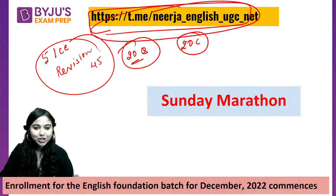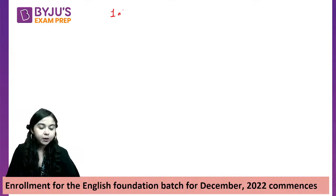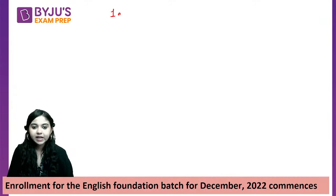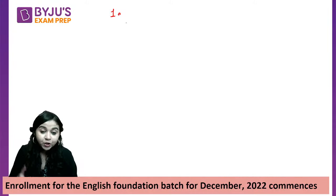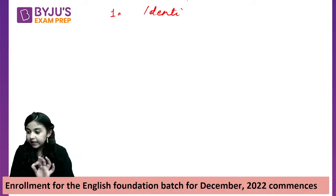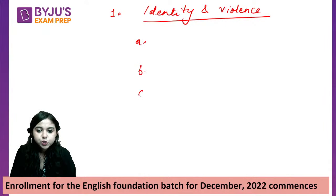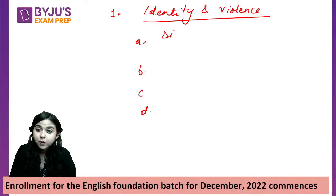Welcome to the Sunday Marathon! Here comes your first question. Who is the writer of 'Identity and Violence'? Please pay a lot of attention. The options are all important — Pag Chakravati, Neil Mukherjee, Amartya Sen, and Amitav Ghosh. Neil Mukherjee is important because of his works getting shortlisted for the Booker, and Amartya Sen is very important especially when talking about literary analysis.